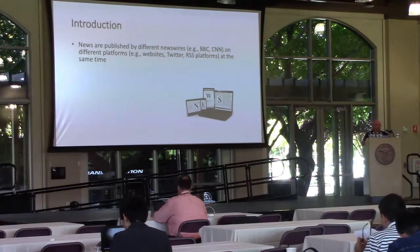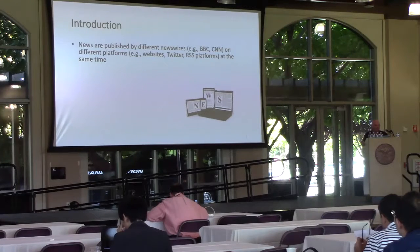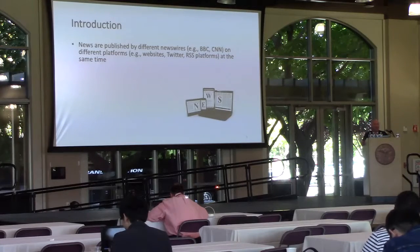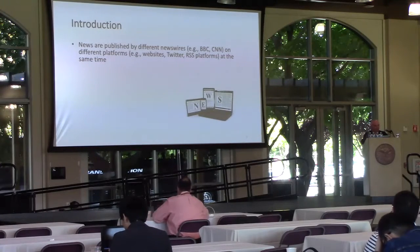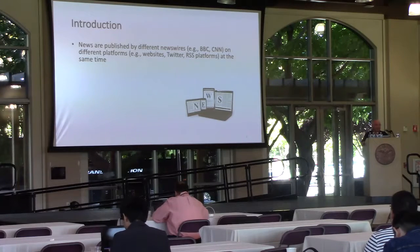In news, there are different news wires and different platforms. Many of these news wires — BBC, CNN — get published on different platforms: website, Twitter, RSS feeds, and for BBC and CNN, they also have their TV channels, maybe their radio, and so on. Each one of these platforms has its own characteristics.